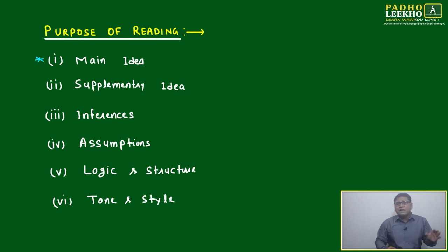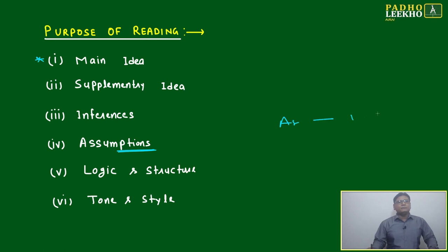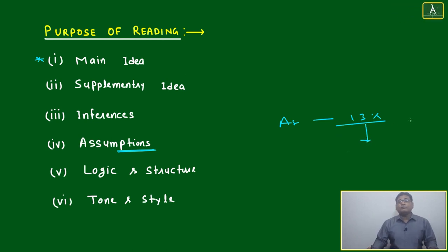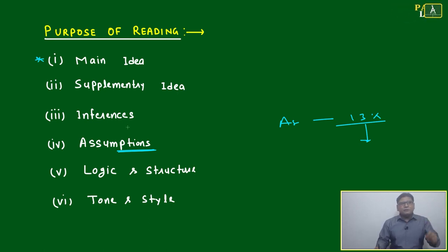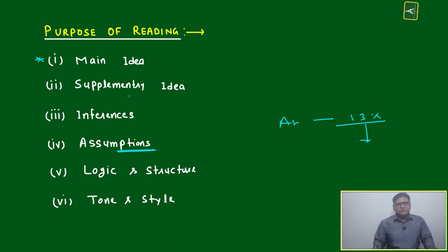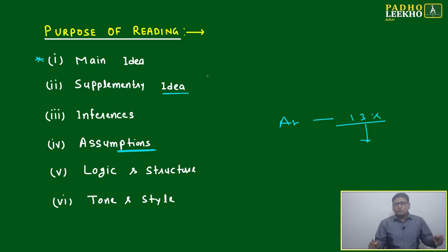How much FDI should come, how much money should be invested by government agencies — based on that we take assumptions. For example, agriculture growth will be 13 percent — at that point it might be an assumption, but if followed properly it will become reality. Based on that we take inferences: if 13 percent agriculture growth happens continuously for five years and this change is visible, that is an inference. Based on that we make supplementary ideas: right now 25 percent of people are below the poverty line; after this only 15 percent will be. The main idea is to make India reach fifth position with a five trillion economy.